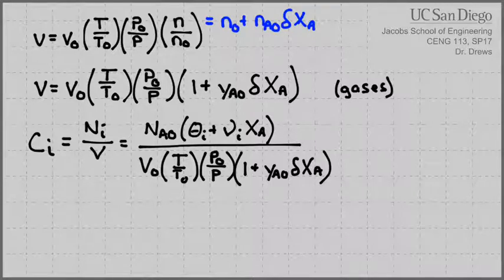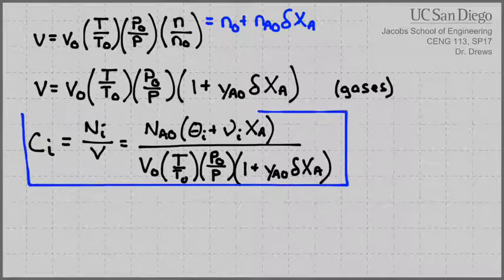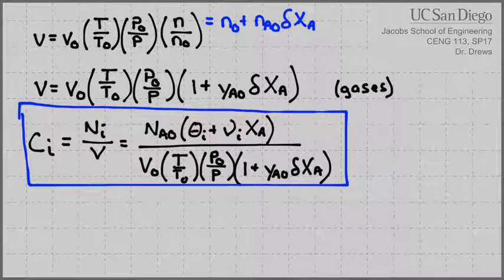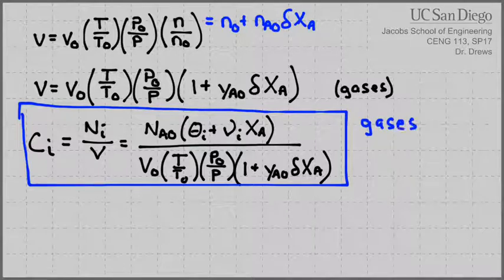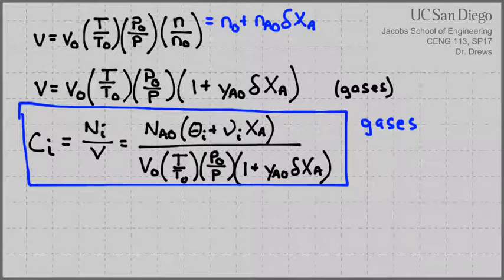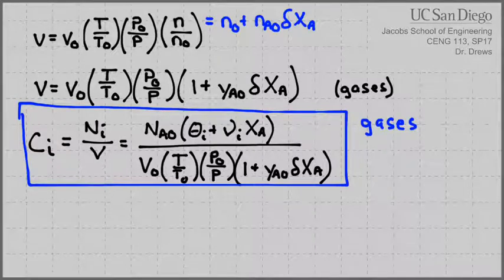This is a pretty important equation — you can always use it and get the same results as the previous simpler C_i expression. It should always be used for gases because it doesn't assume V is constant; it allows V to change with temperature, pressure, and moles. At constant temperature and constant pressure, the T/T₀ and P₀/P terms simplify to 1, leaving only the (1 + Y_A0·δ·X_A) correction in the denominator.